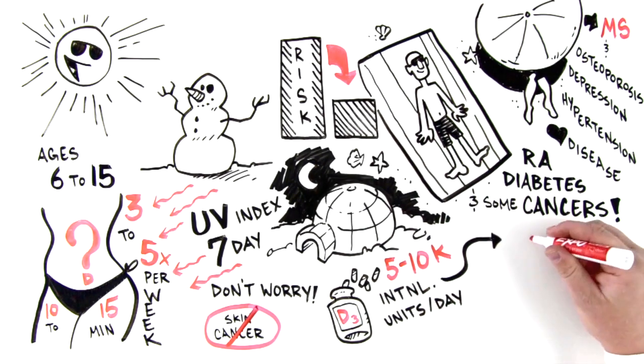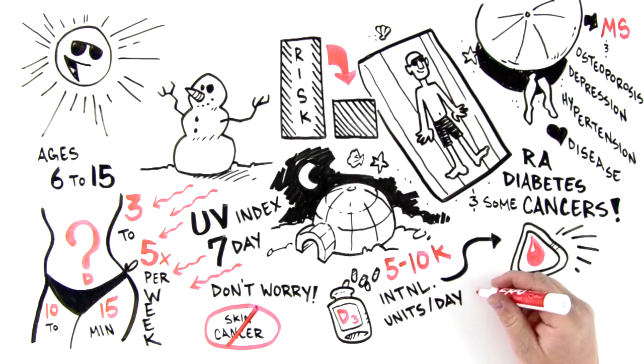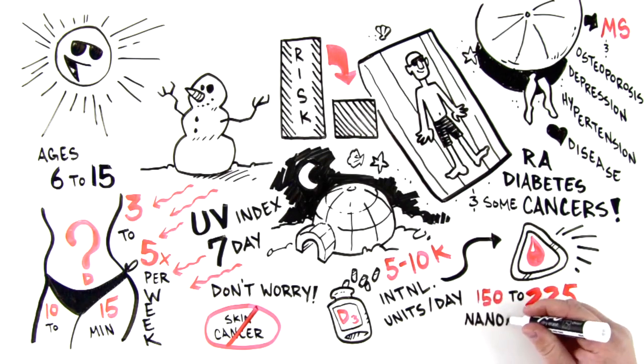The exact dosage needs to be adjusted to your blood level. Aim to keep blood level of vitamin D between 150 and 225 nanomoles per liter.